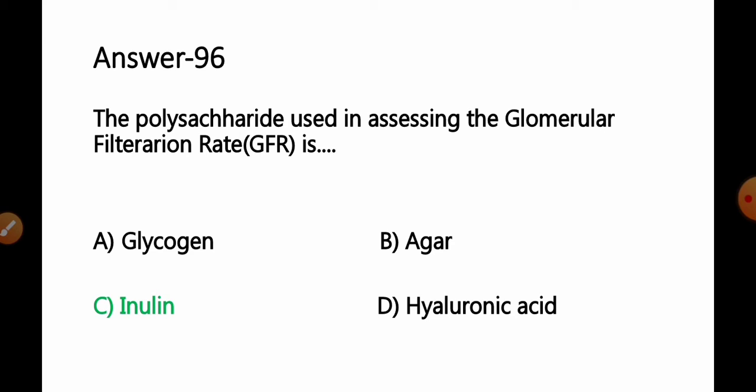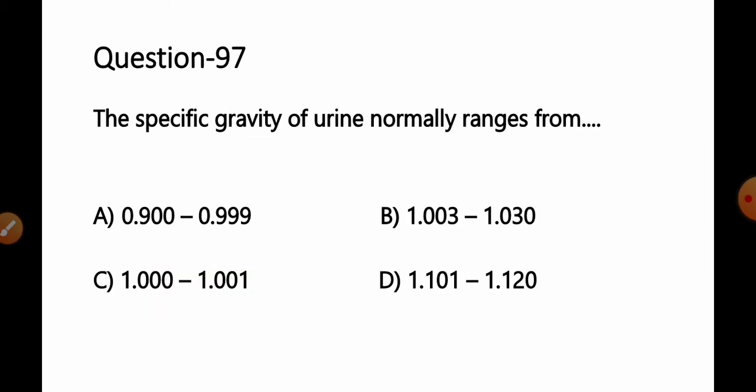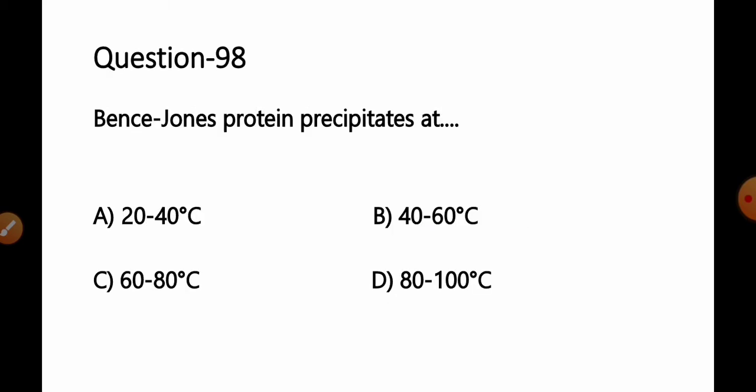Question 97: The specific gravity of urine normally ranges from: A) 0.900 to 0.999, B) 1.003 to 1.030, C) 1.000 to 1.001, D) 1.101 to 1.120. This is one of the easiest questions commonly asked in various exams. Option B, 1.003 to 1.030, is the normal specific gravity of urine. Option B is the correct answer.